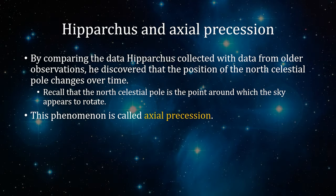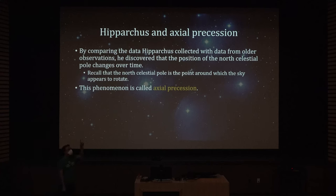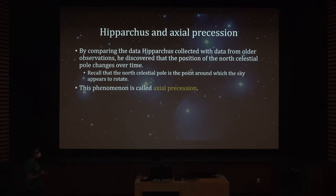By comparing the data Hipparchus collected with data from all prior observations, he discovered that the position of the North Celestial Pole changes over time. The North Celestial Pole is the point around which the sky appears to rotate — if you look at the sky, everything rotates around that point. This phenomenon — that the position of the North Celestial Pole changes over time — is called axial precession.